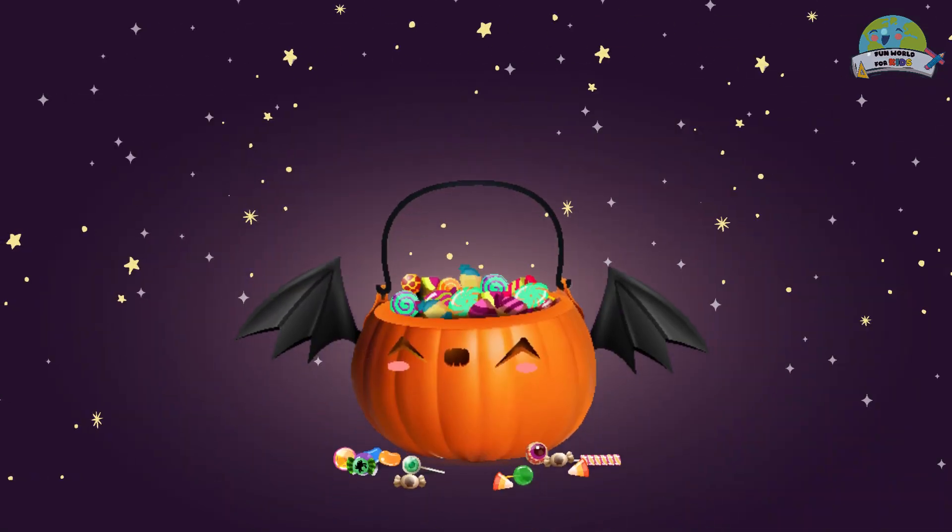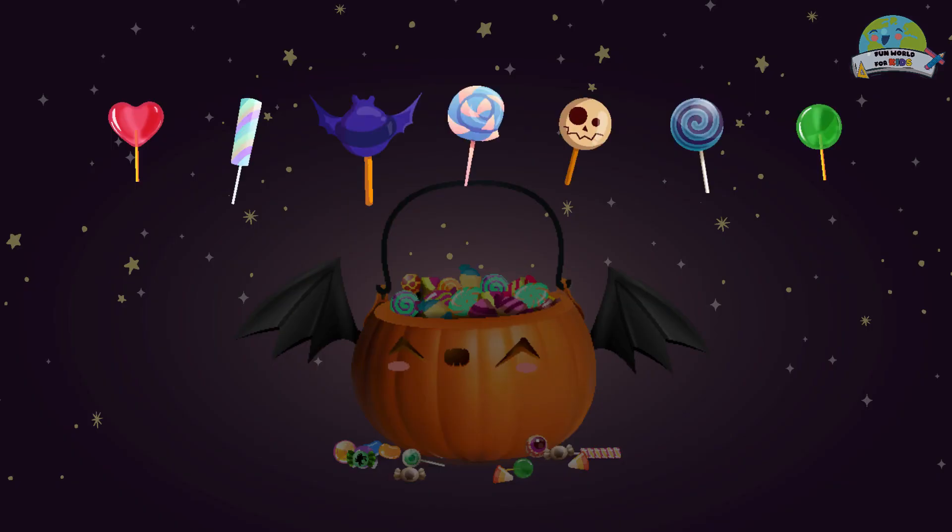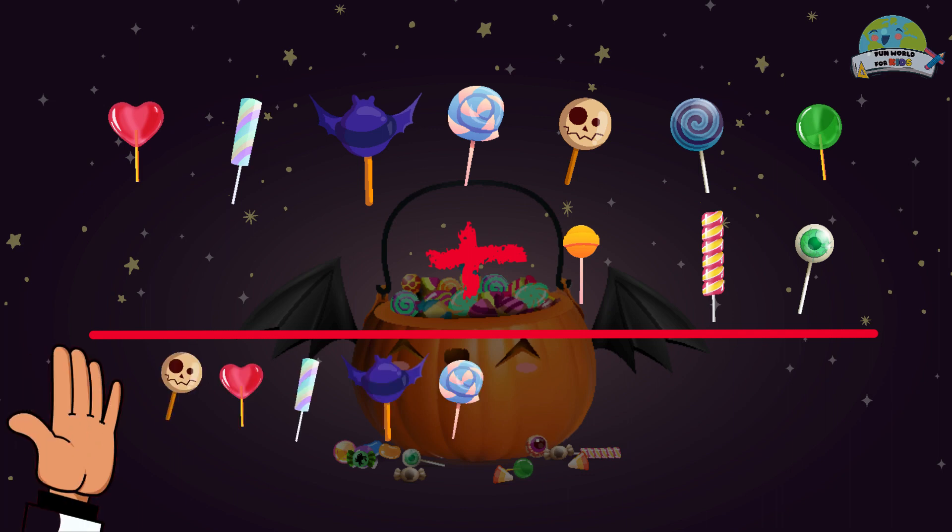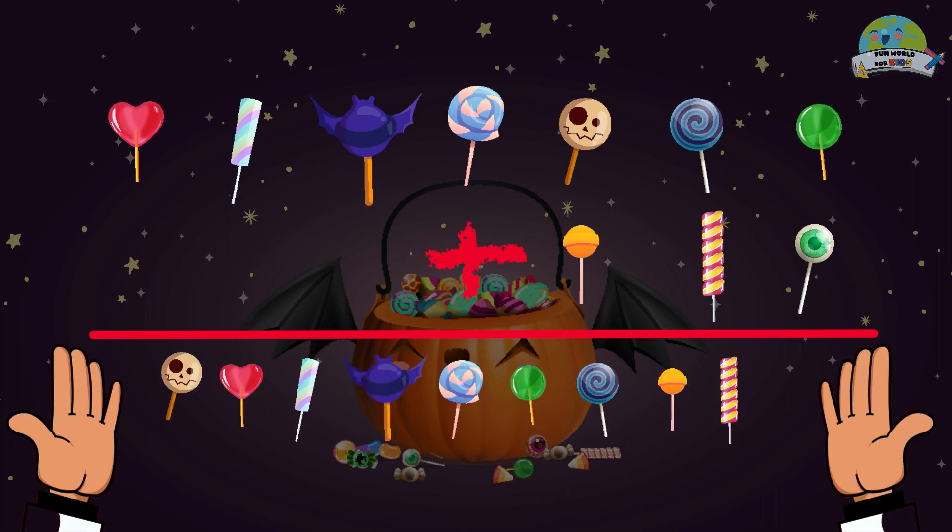On Halloween, you get seven lollipops and your grandma gives you three more lollipops. How many in total do you have? Let's count one, two, three, four, five, six, seven, eight, nine, ten. Ten! Excellent!